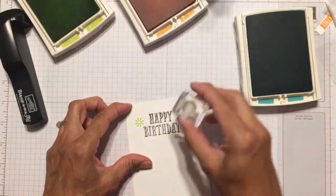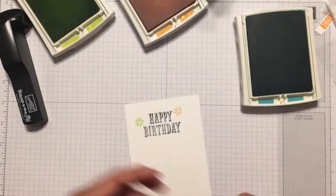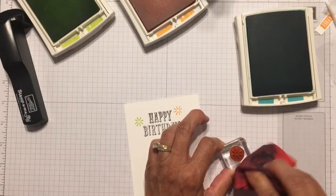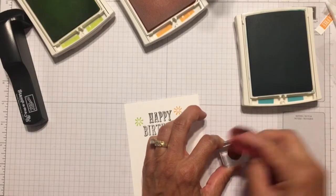And anyway, so I've stamped the Lemon Lime Twist and cleaned off my stamp. And use Peek-A-Boo Peach, and then I'm cleaning it again, and we're going to use the Bermuda Bay.